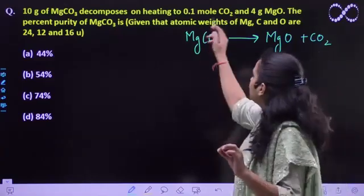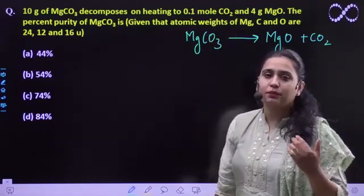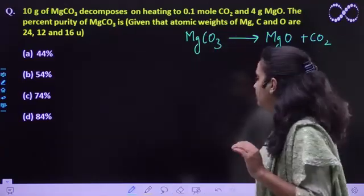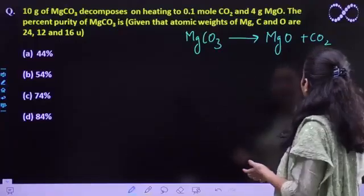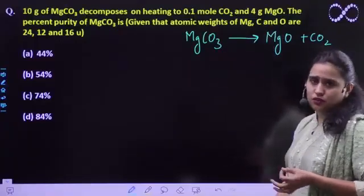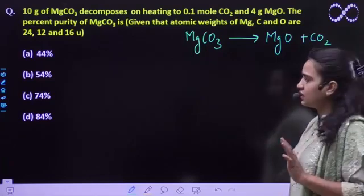Now, you can solve this question using either of these two products. You are given CO2 moles so we will solve using that, or you can also solve by finding how much MgCO3 produces 4 gram of MgO.